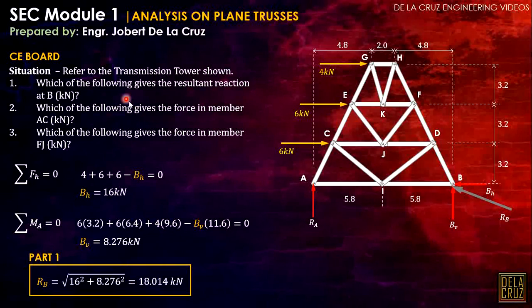Now we can calculate the RB by Pythagorean theorem. That will be square root of 16 squared plus 8.276 squared, and that is 18.014 kilonewtons. That is the answer for part 1.